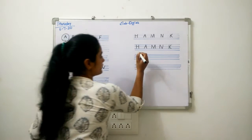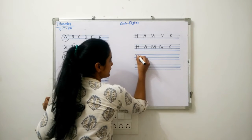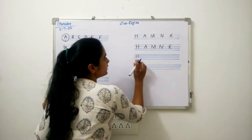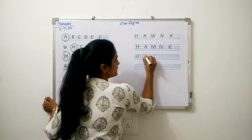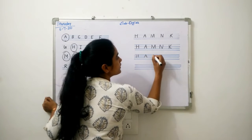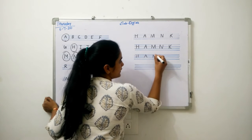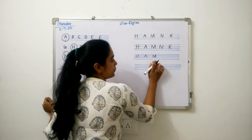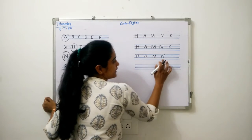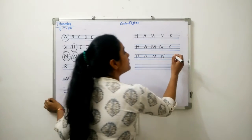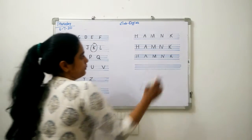Once again, repeat with me. H: standing line, slipping line, standing line. A: slanting line, slanting line, slipping line. M: standing line, slanting line, slanting line, standing line. N: standing line, slanting line, standing line. K: standing line, slanting line, slanting line.